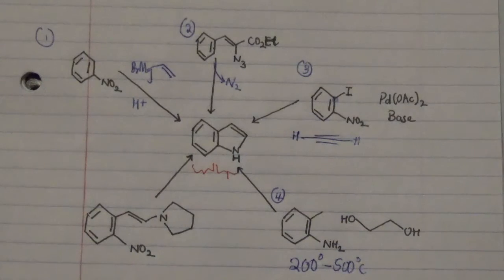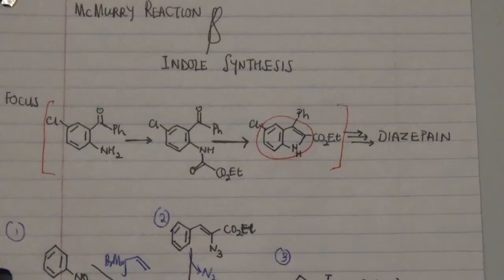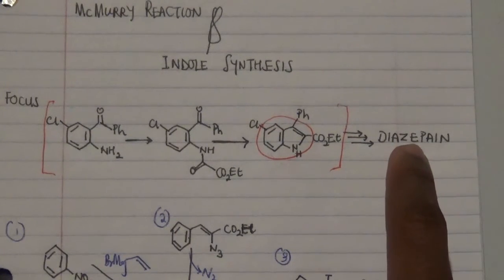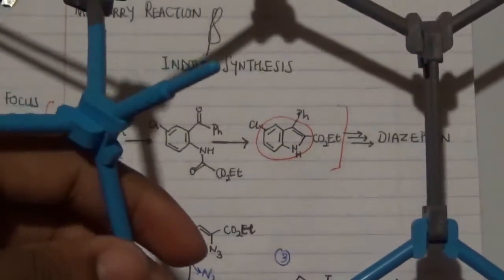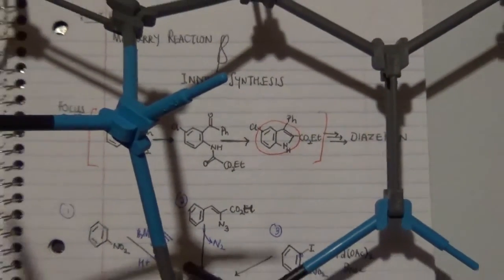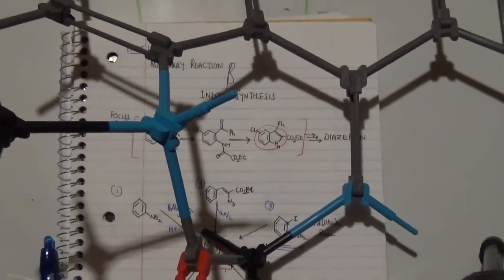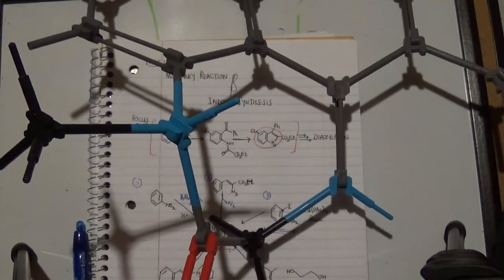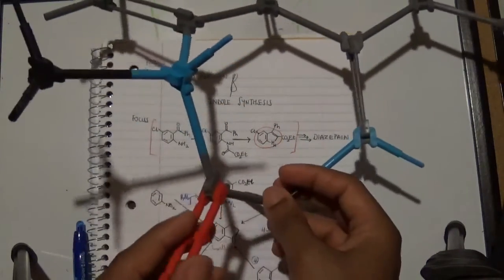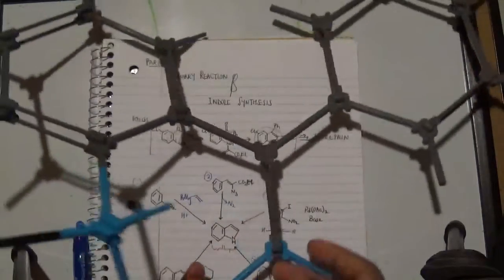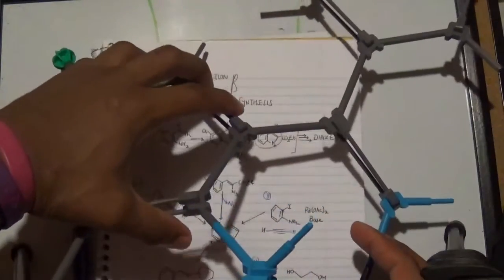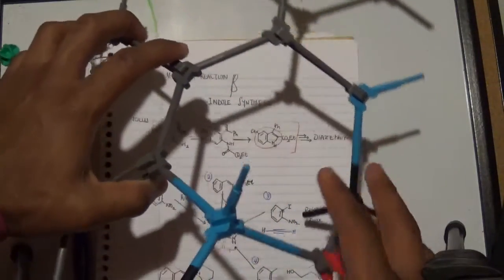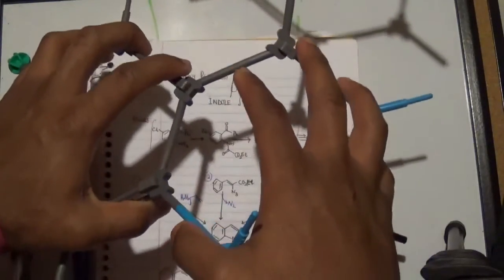That is about it for this particular step. Let me quickly show you a model of this particular product. This model we have is actually quite interesting. Let me zoom this a little bit. What we have over there is this particular fusion of two rings. We have a benzene group fused to a pyrrole or phenyl group.